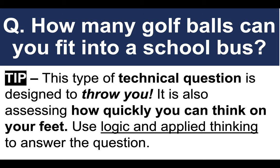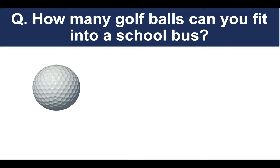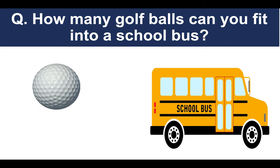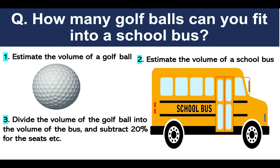It's important you use logic and applied thinking to answer the question. We would first of all estimate the volume of a golf ball, then estimate the volume of a school bus — we would need to assume these, not get them exactly correct. We would then divide the volume of the golf ball into the volume of the bus and then subtract 20% for the seats, etc.